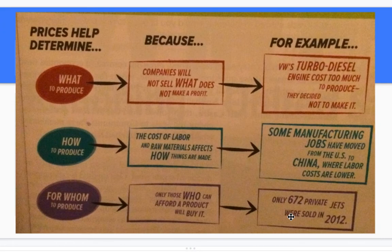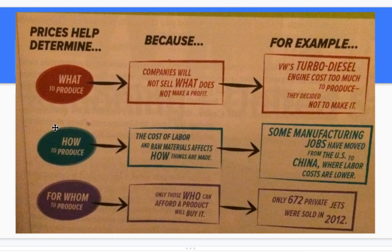That small number of private jets still represents very wealthy buyers, but companies must ensure they're creating things that generate profit. How much research and development goes into something if you only sell 672 in a year? The answer depends on profit per item — if you produce it cheaper, you're willing to make more.